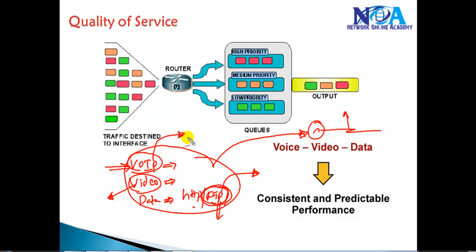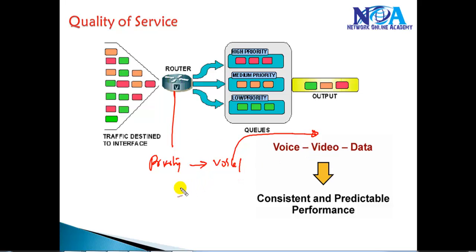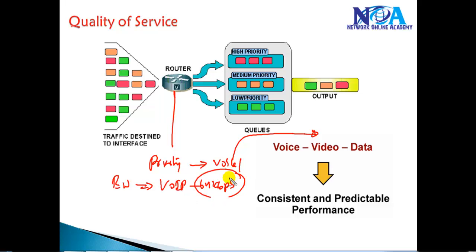When there is less bandwidth available on the link, we can configure QoS to give priority to specific traffic. For example, we say that voice or video traffic should be sent first before all remaining traffic. That can be done using Quality of Service.